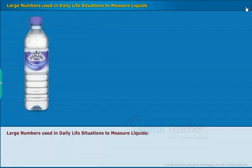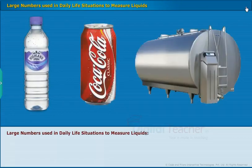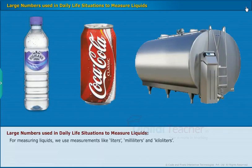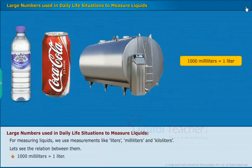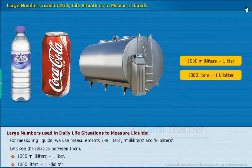Large numbers used in daily life situations to measure liquids: For measuring liquids, we use measurements like liters, milliliters and kiloliters. Let us see the relation between them. Thousand milliliters is equal to one liter. Thousand liters is equal to one kiloliter.